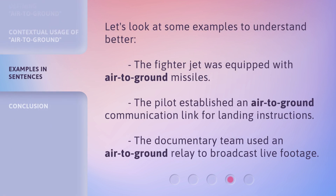Let's look at some examples to understand better. The fighter jet was equipped with air-to-ground missiles. The pilot established an air-to-ground communication link for landing instructions. The documentary team used an air-to-ground relay to broadcast live footage.